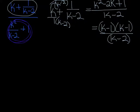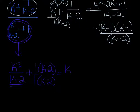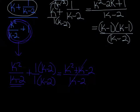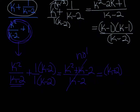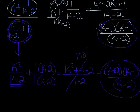Second step: simplify the denominator. We have k squared over (k minus 2) plus 1 over 1, so the common denominator needs to be k minus 2. Multiplying 1 by (k minus 2)/(k minus 2) gives us k squared plus k minus 2, all over k minus 2. Don't cross things out before factoring — that's killing kittens. Factor the top: factors of negative 2 that add to positive 1 give us (k plus 2)(k minus 1). So the denominator of the complex fraction is (k plus 2)(k minus 1) over (k minus 2).